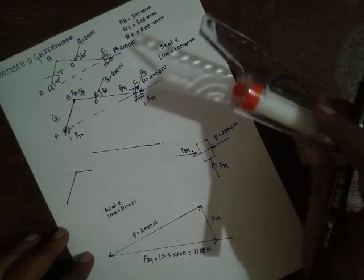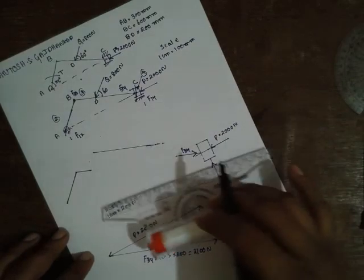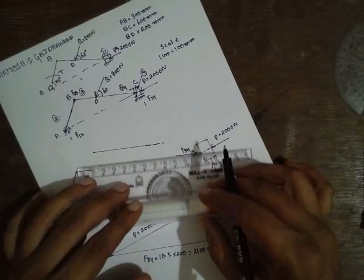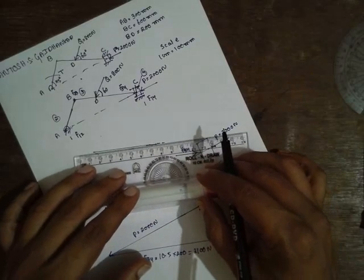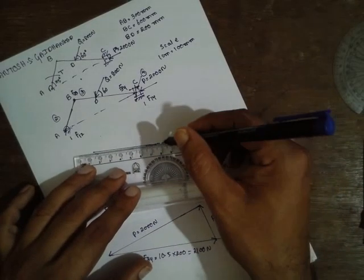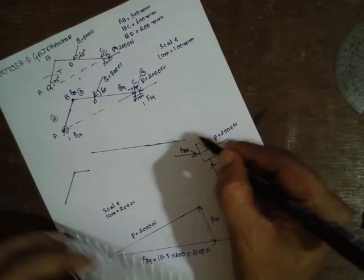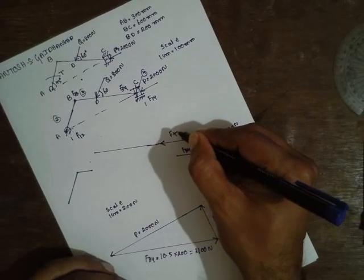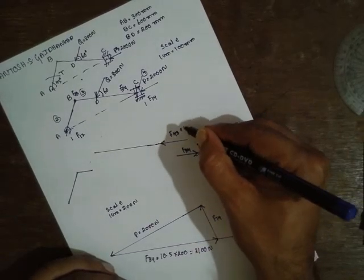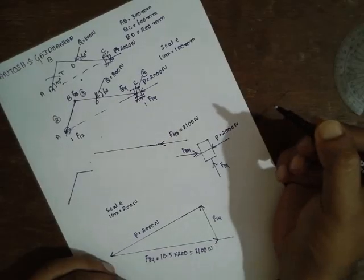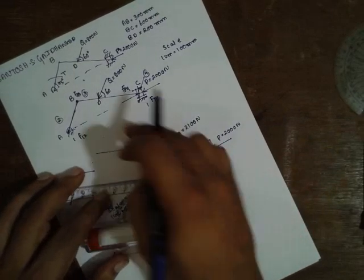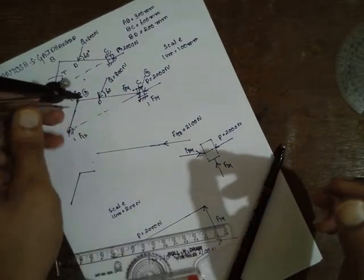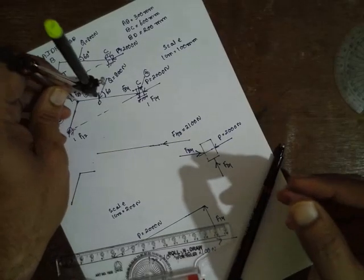This link is nothing but F34. We have to calculate it: 10.5 into 200 N, it becomes 2100 N. This one we have required. That means the force acts - the vector represents should be in this way. The other vector should be in this way.